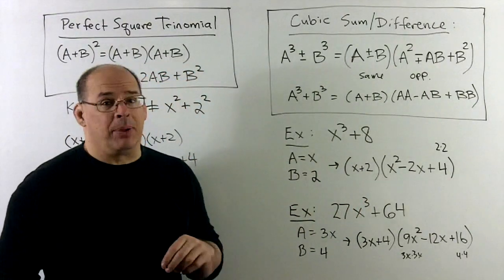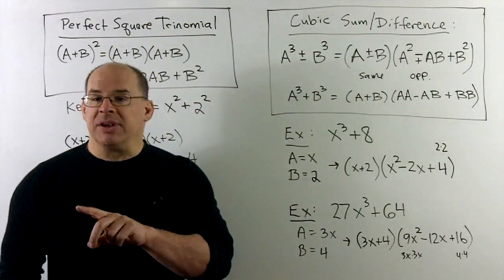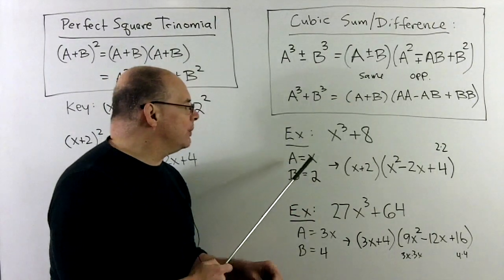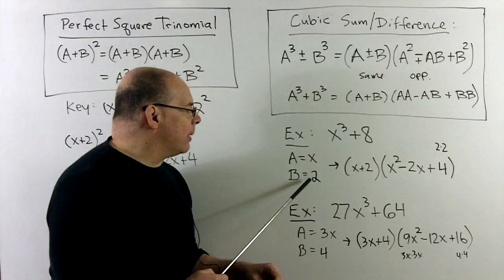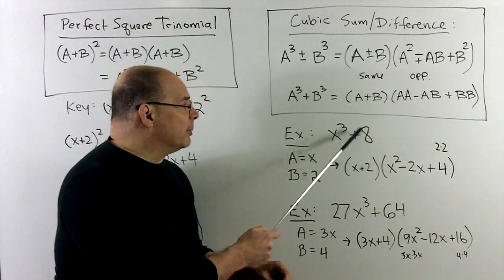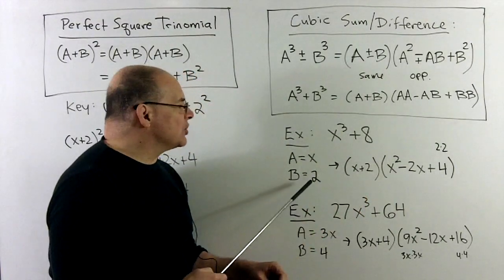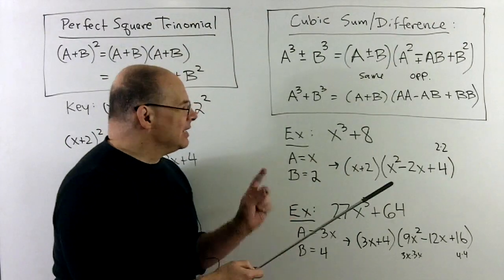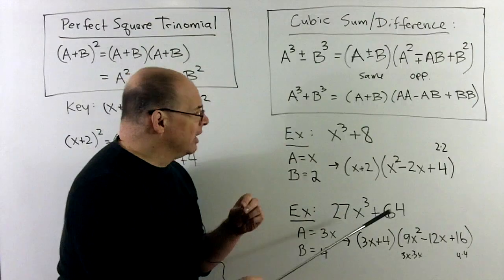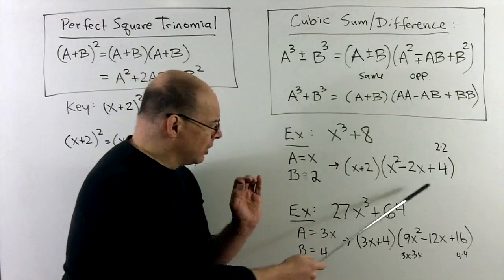For example, if we have x³ + 8, we do our bookkeeping: x cubes up to x³, and 2 cubes up to 8. We have a plus in the middle, so we use the sum formula. That gives (x + 2)(x·x − 2x + 2·2) = (x + 2)(x² − 2x + 4). This second factor typically won't factor nicely, so we stop there unless instructed otherwise.